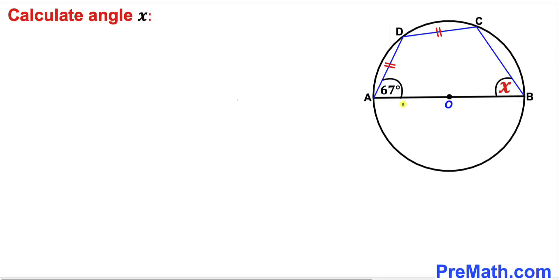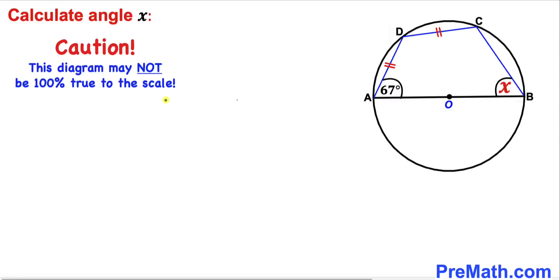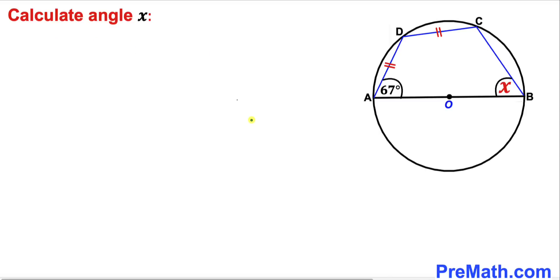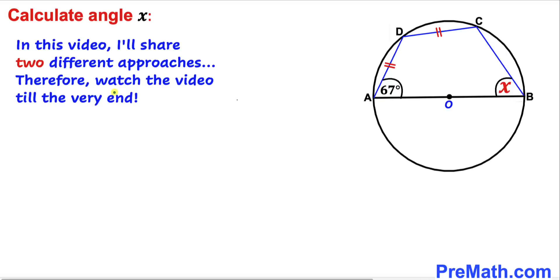Welcome to PreMath. In this video we have a quadrilateral ABCD inside a circle such that chord AD equals chord CD, and this angle OAD is 67 degrees. We are going to calculate angle X. Note that this figure may not be 100% true to scale. I'll share two different approaches to solve this problem, so please watch till the very end.